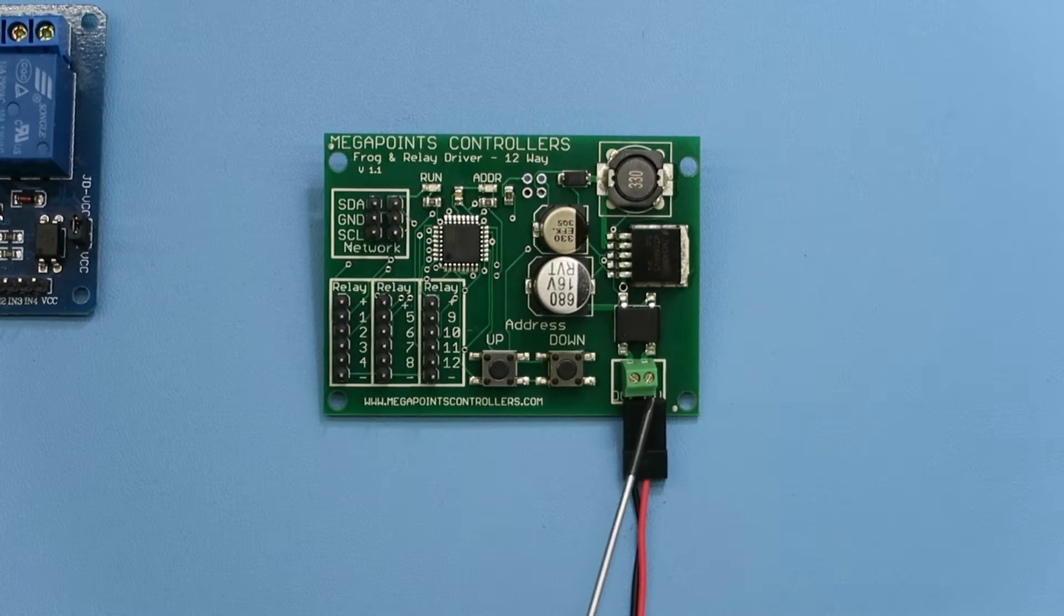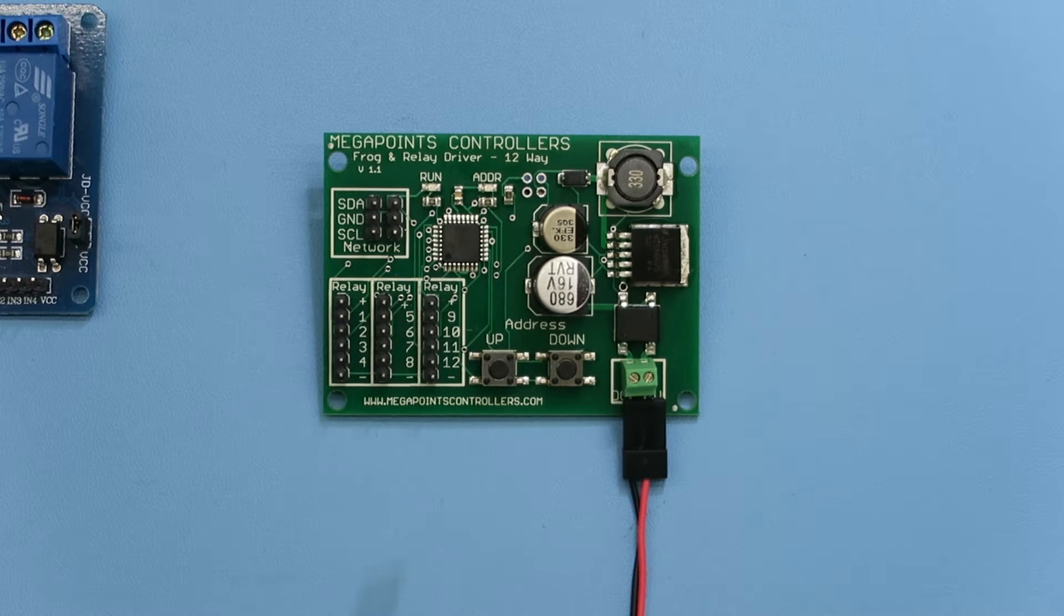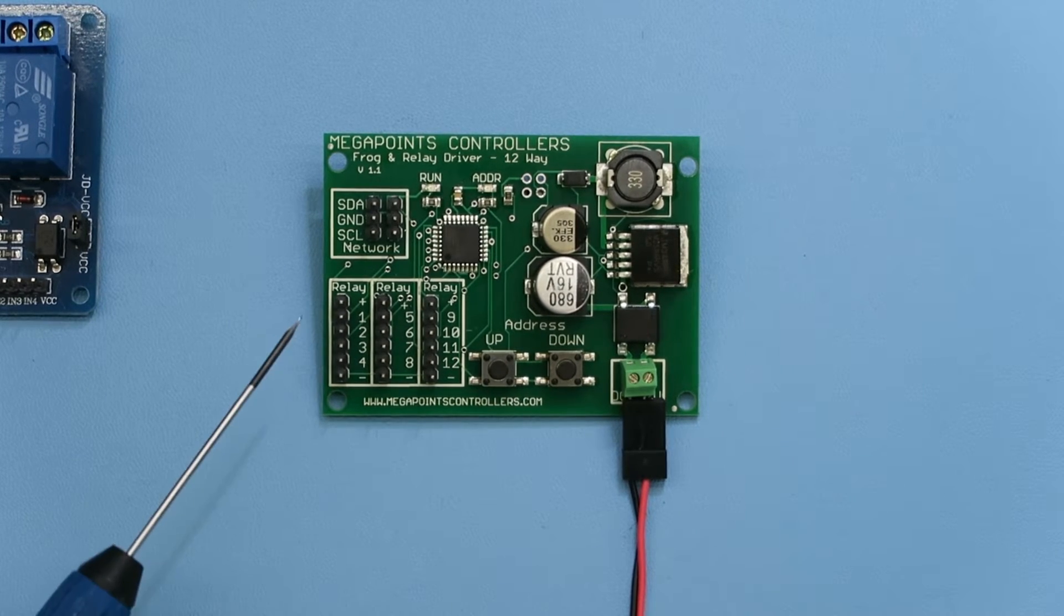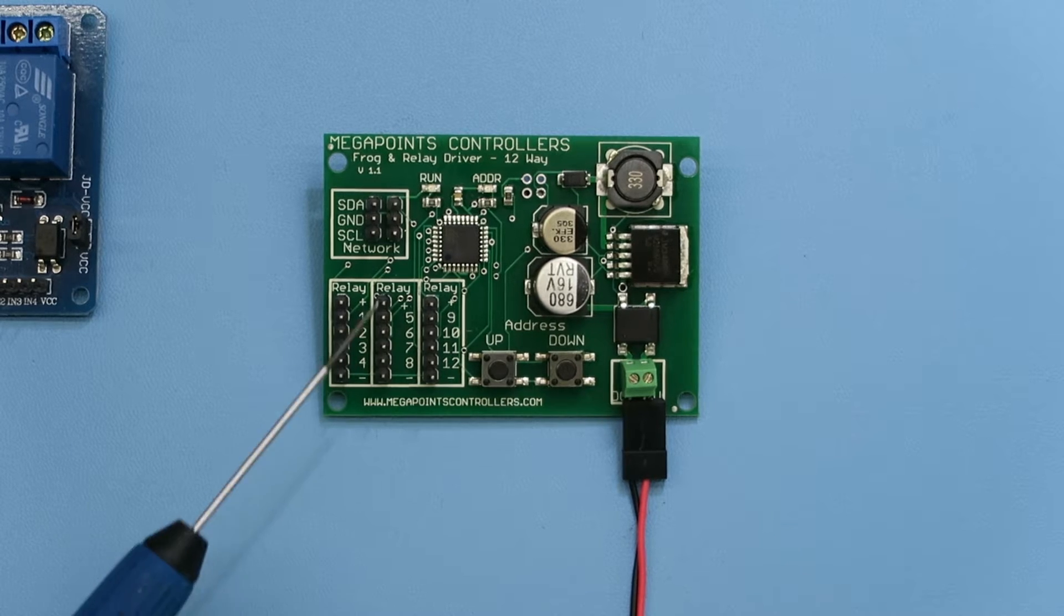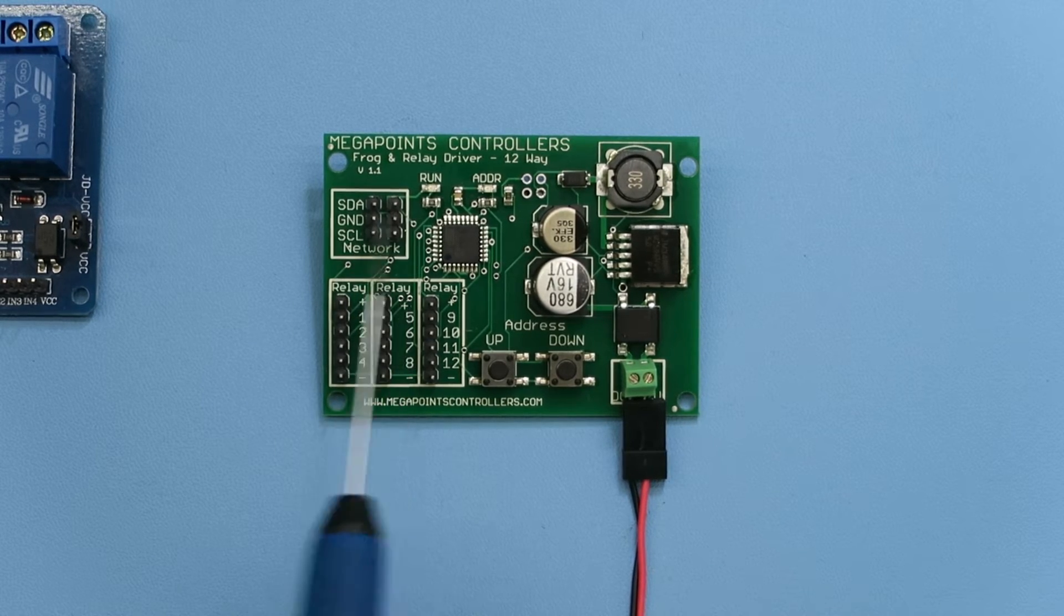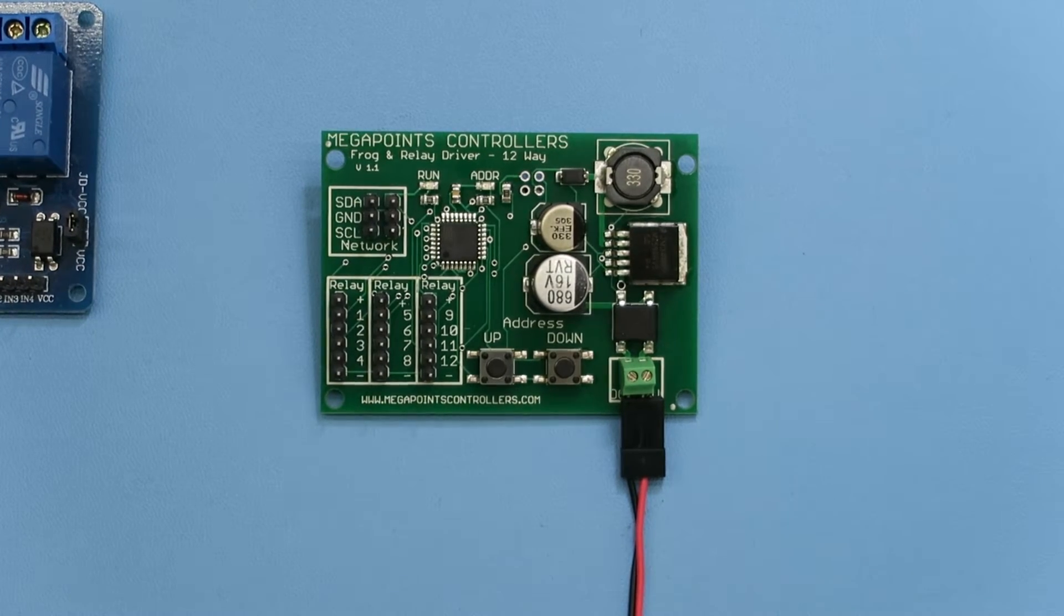The relay has the usual 12 volt power connector here. It has two buttons for setting the address up or down and 12 relay outputs 4, 8 and 12 and the two network connections here so that you can daisy chain it as part of your network.